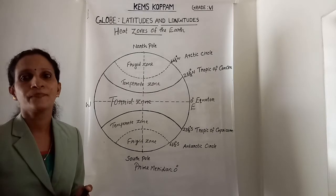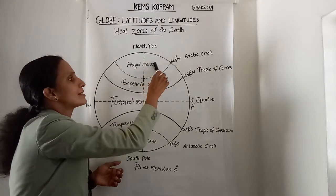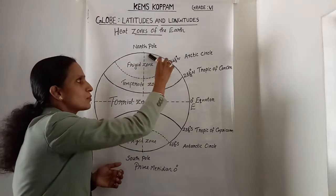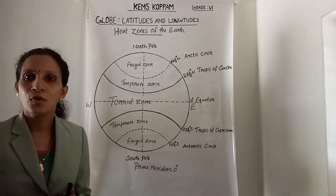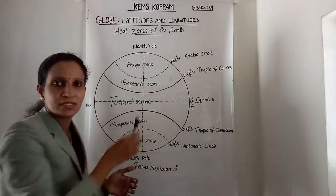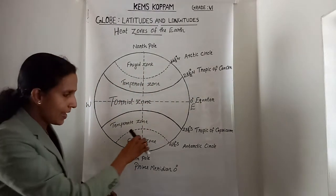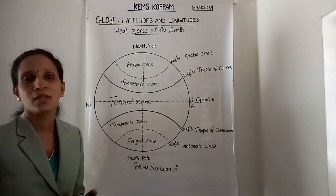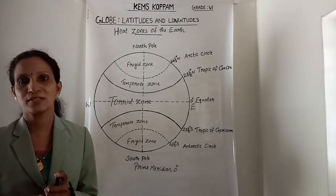The area between the Arctic Circle and the North Pole in the northern hemisphere, and the area between the Antarctic Circle and the South Pole in the southern hemisphere, is very cold.